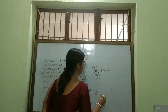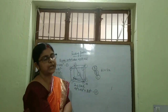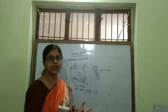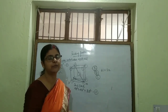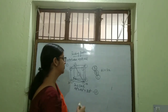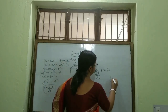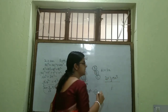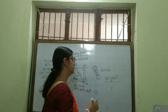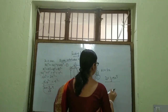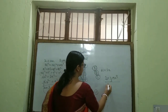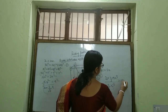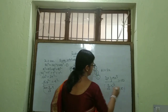For packing efficiency of BCC: volume of sphere is (4/3)πR³ into 2, since the number of particles in BCC is 2, divided by volume of cube A³, which is (4/√3 · R)³, into 100. You will be getting 68%.